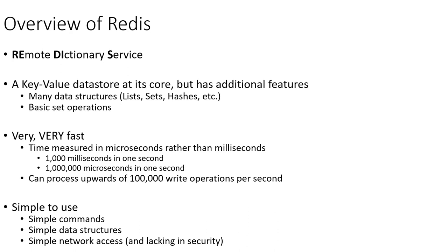Redis is very simple to access over the network, and that comes at the expense of security, which we have to apply elsewhere — like in our network ACLs and firewall rules.